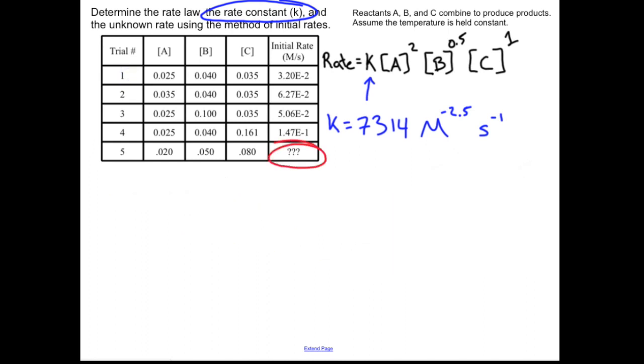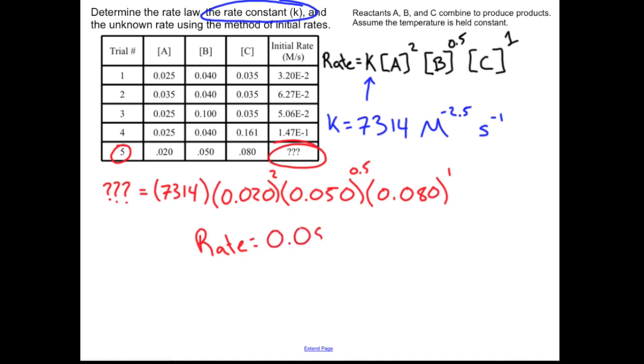Now that we have that, we tackle this very last thing we were asked to do, which is pretty straightforward. My rate that I'm trying to find, now I'm only focused on trial 5, is going to be equal to my rate constant, 7,314—I'm going to leave units out for space—0.020, 0.050, 0.080, and then I have my different exponents. Can't forget those. If you do this and crunch all those numbers, you will find that particular rate is going to be something like this. That is the final answer for what I was looking for.